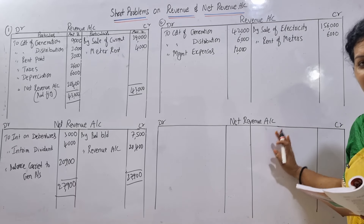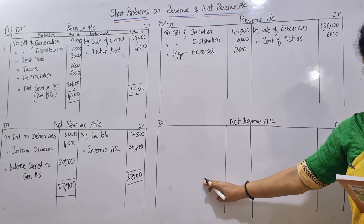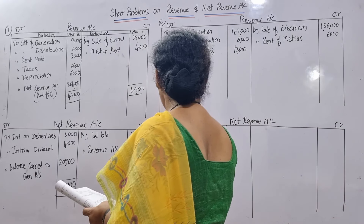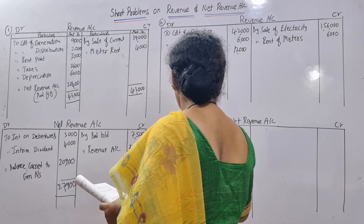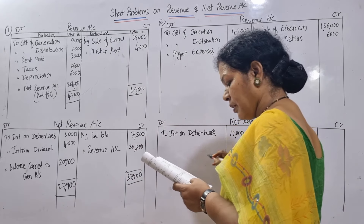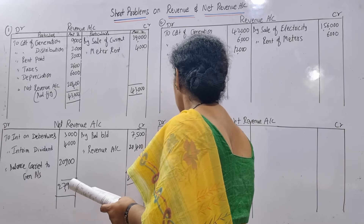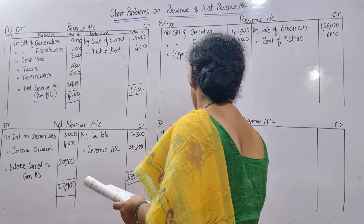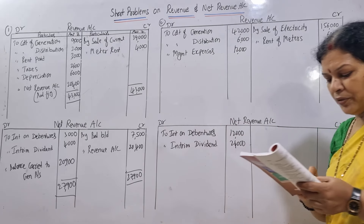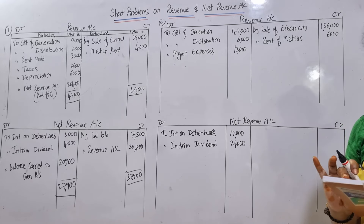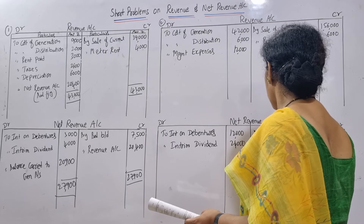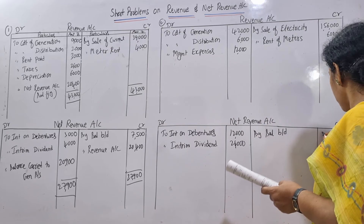Interest on debentures goes to net revenue account debit side - interest on debentures, 12,000. Interim dividend also debit side - interim dividend, 24,000. Balance of net revenue account is given, which is always credit side - by balance brought down, 33,000 from last year.